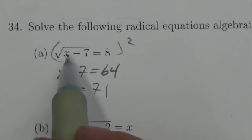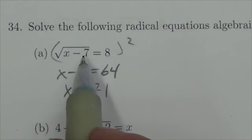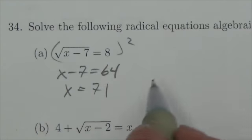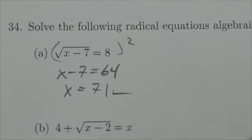I'll just double check that: 71 minus 7 is 64, and the square root of 64 is 8. That one works.